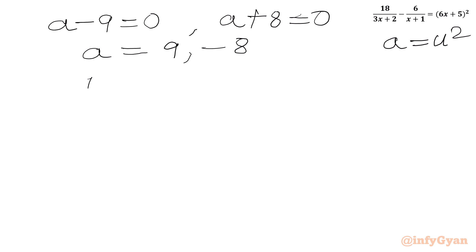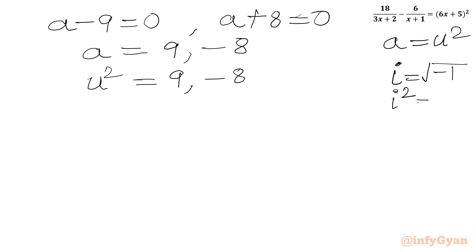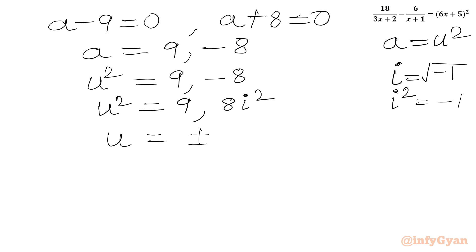Substituting back u² = 9 or u² = −8. We can write −8 as 8i². Taking square roots of both sides, we get u = ±3 and u = ±i√8 = ±2i√2.